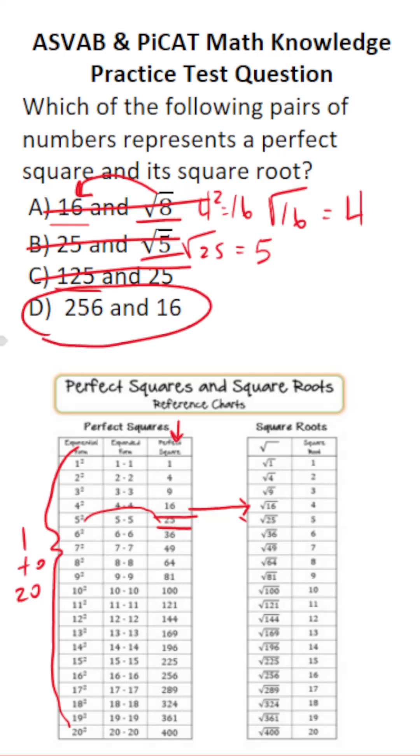By process of elimination, we know D is correct. You can see that 256 is a perfect square. 16 squared, which is equal to 16 times 16, is 256.